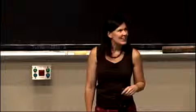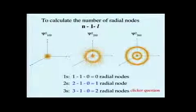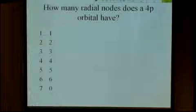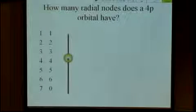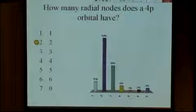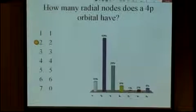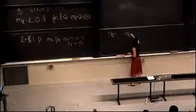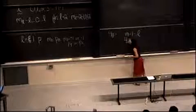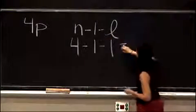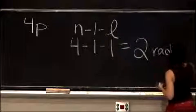This should be pretty straightforward. Let's see if we can get close to 100 percent on this one: how many radial nodes does a 4p orbital have? Most people were correct — the majority, at least. The answer is that a 4p has two radial nodes. Let's write this out since not everyone got it correct. For a 4p orbital, our equation is n minus 1 minus l. The principal quantum number is 4, and for a p orbital l equals 1. So: 4 minus 1 minus 1 gives us two radial nodes.